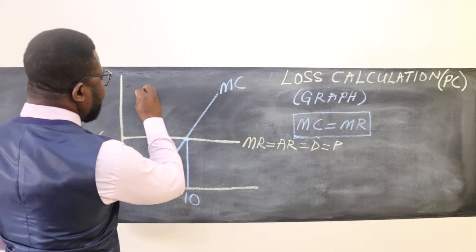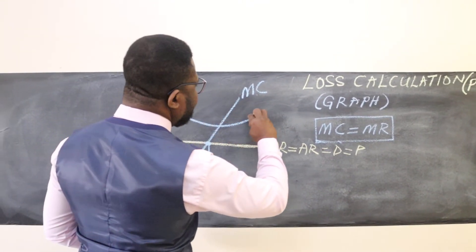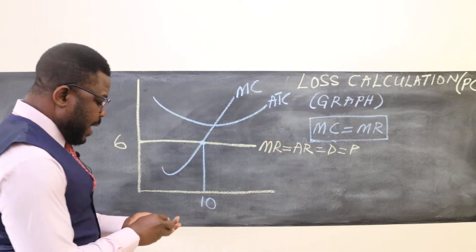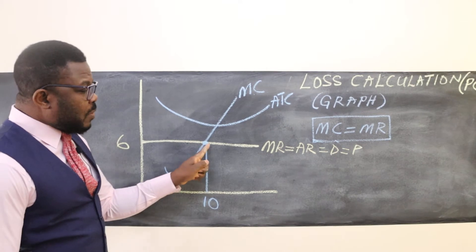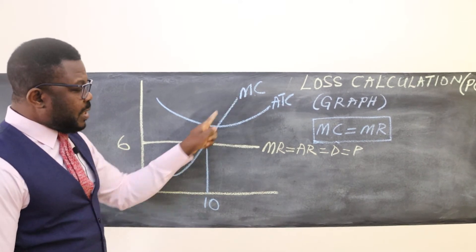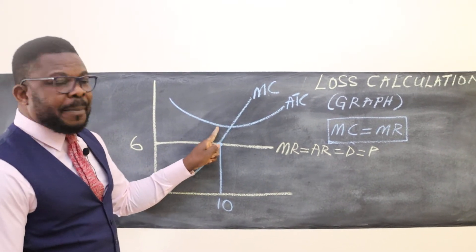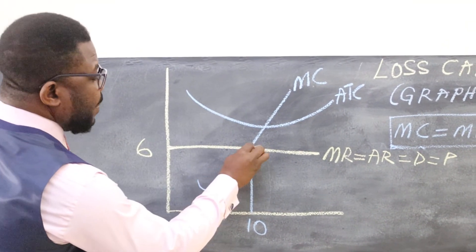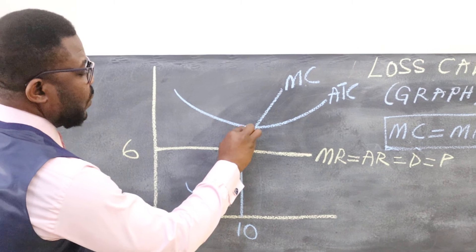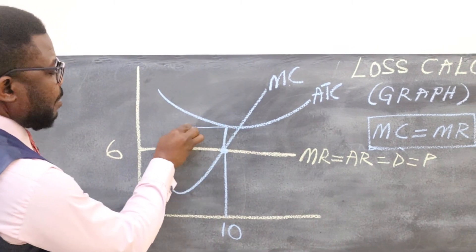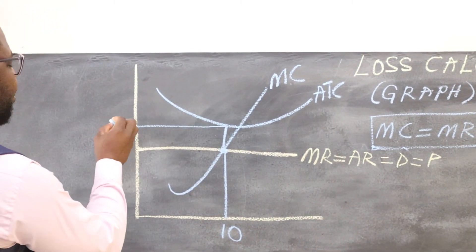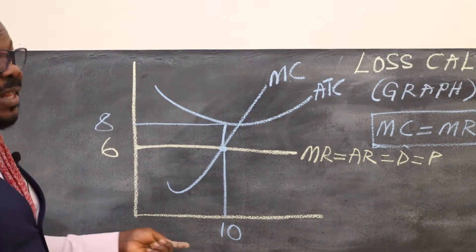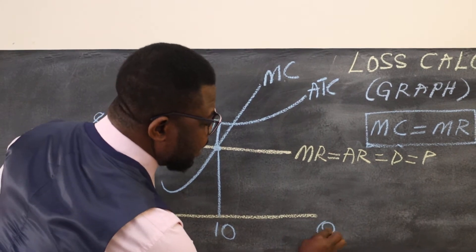Here's what we do: we have our ATC. Remember, you should always look for MC equals MR, and then go up to meet the ATC. So let's go up, come to the left-hand side to see your cost. Let's say this is eight as an example.